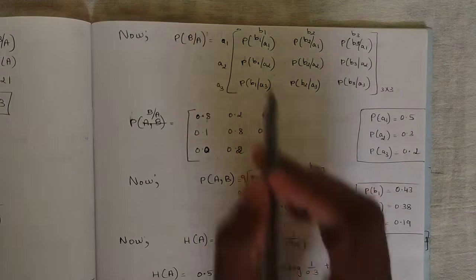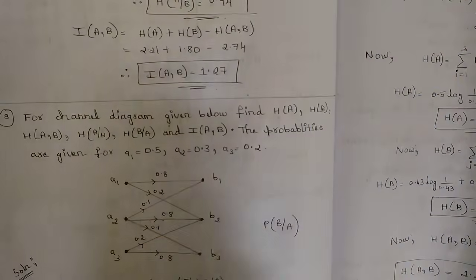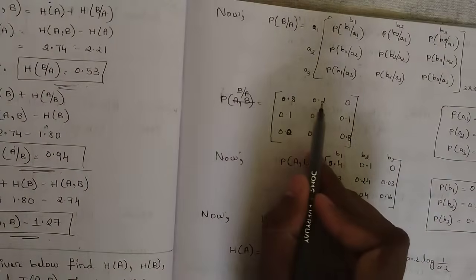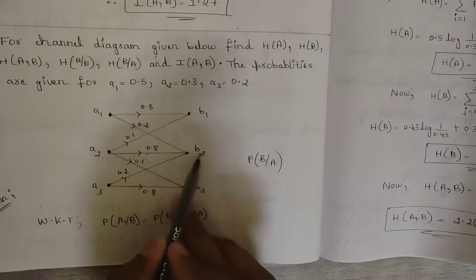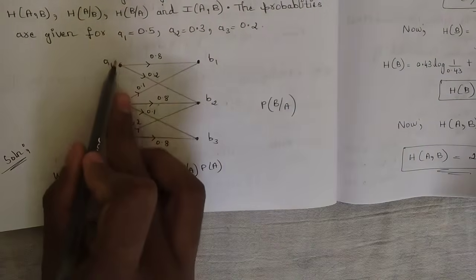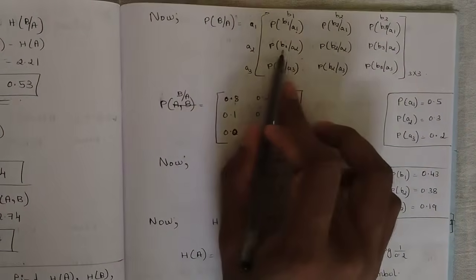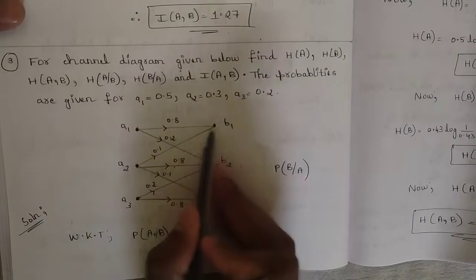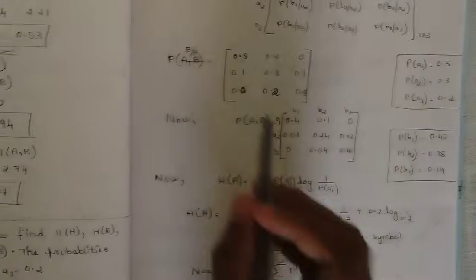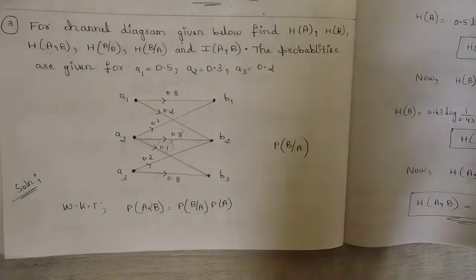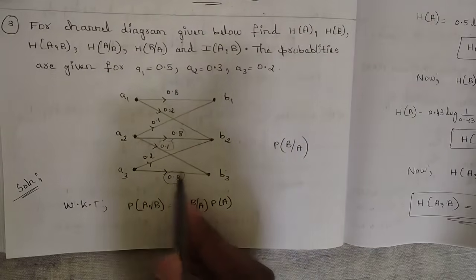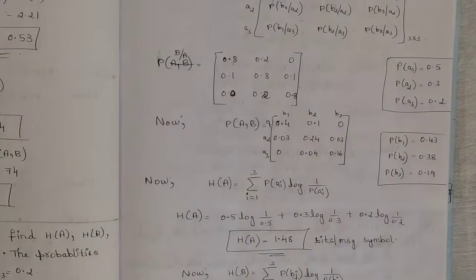For P(B1|A1), consider the line joining B1 and A1 — the probability flowing through that line is 0.8. For P(B2|A1), the probability is 0.2. For P(B3|A1), there is no connection, so the probability is 0. For P(B1|A2) it is 0.1, P(B2|A2) is 0.8, P(B3|A2) is 0.1. For P(B1|A3) it is 0, P(B2|A3) is 0.2, and P(B3|A3) is 0.8.